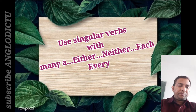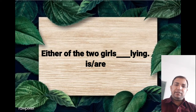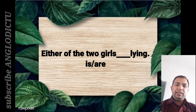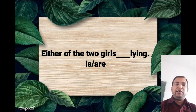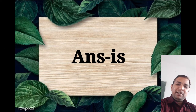For example: 'Either of the two girls ___ lying.' The question is should we use is or are here. Donohan meinse kooyak ladkiyaan jhoot bol raha hai — so here it will be singular, my friend. Either of the two girls — is — lying.